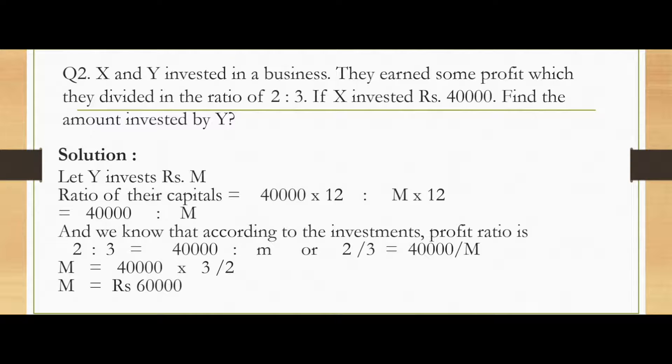So we can find one equation: 2 is to 3 is equal to 40,000 is to M, or 2 by 3 equals 40,000 by M. By this we can find out the value of M. So M will be 40,000 into 3 by 2 which will come to Rs.60,000.